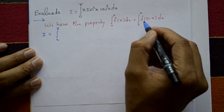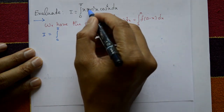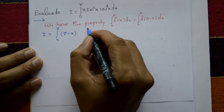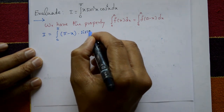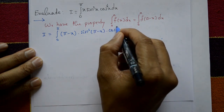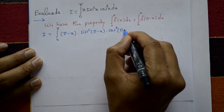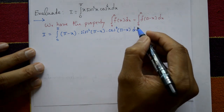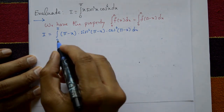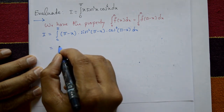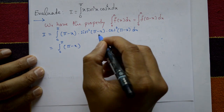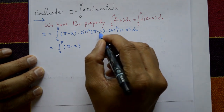So I is equal to the integration from 0 to π where f(x) becomes f(a minus x), meaning f(π minus x): (π minus x)·sin²(π minus x)·cos⁴(π minus x) dx.